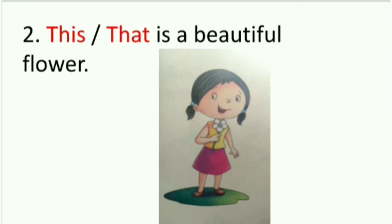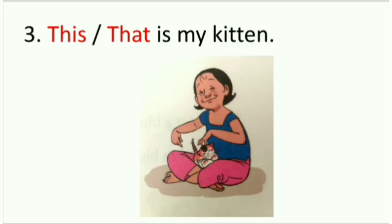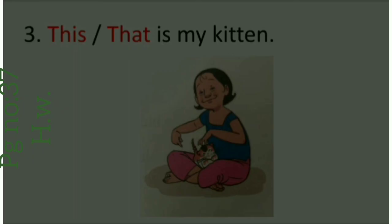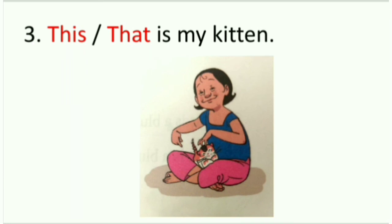The second one: (this / that) is a beautiful flower. A girl is holding a flower in her hand and the flower is nearby, so we circle T-H-I-S, 'this'. The third one: (this / that) is my kitten. The kitten is in the lap of a girl so the kitten is nearby — the thing that is nearby, we circle T-H-I-S, 'this'.